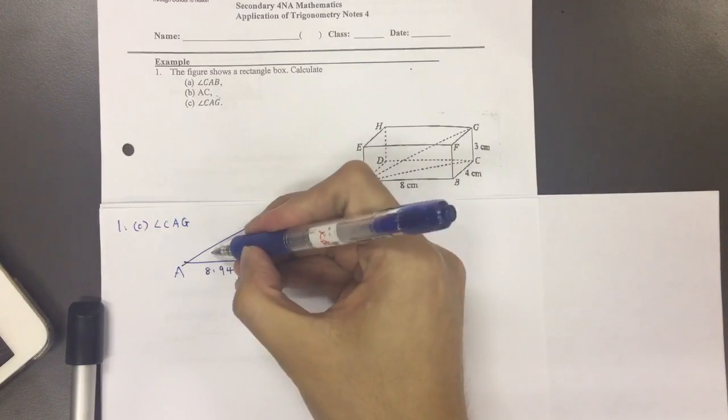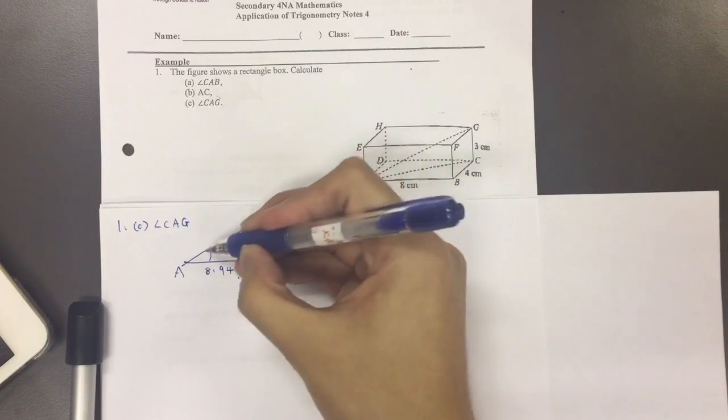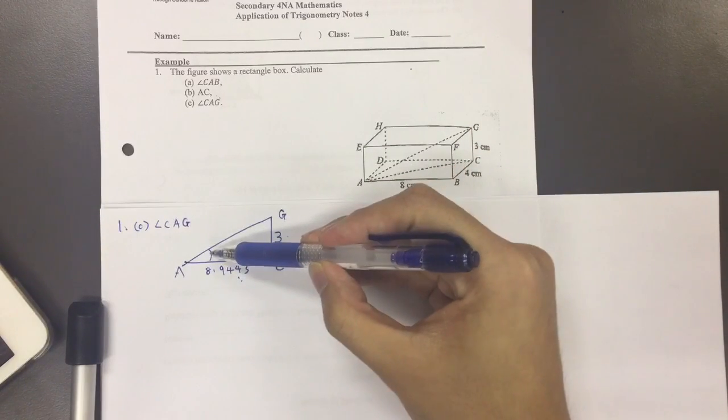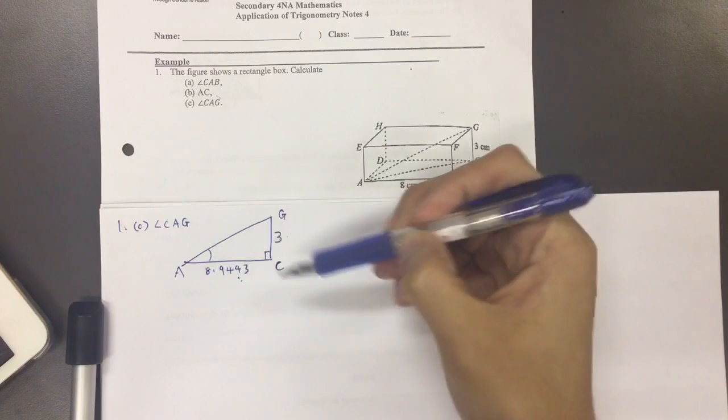And now we want to find this angle here, CAG. So we have a side, we have a side and we want to find this angle. So what do we use?